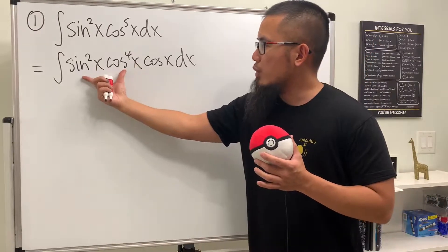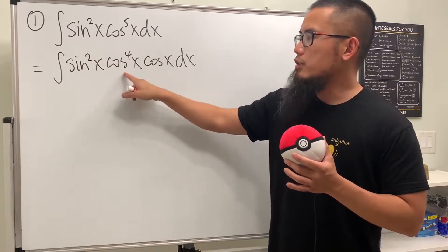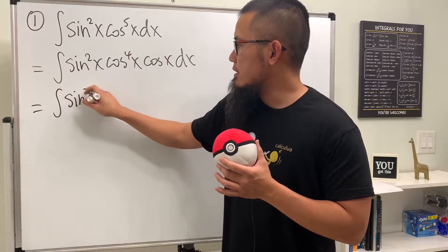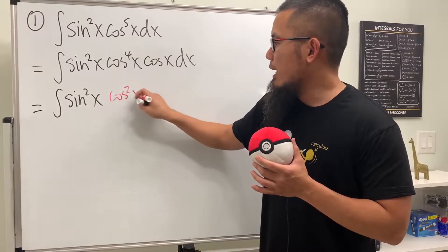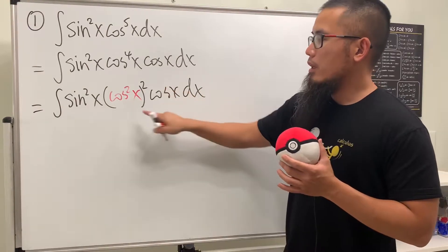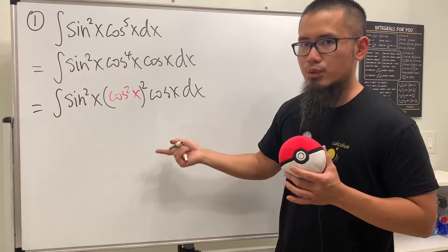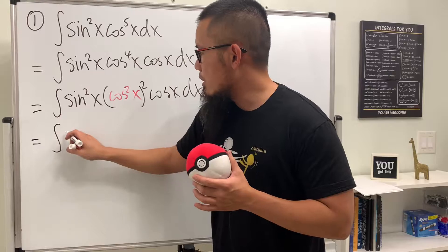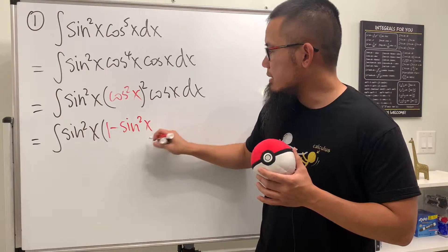We want to convert the rest in terms of just sine x. The sine squared x is already there, so that's good. We look at cosine to the fourth power x as cosine squared x, squared, and then times cosine x. Why? Because cosine squared x equals one minus sine squared x. So you always want to look at cosine to the second power — that's really helpful. So this becomes the integral of sine squared x times one minus sine squared x, squared, times cosine x.